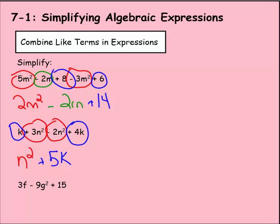For this last one here, we have 3f - 9g² + 15. Looking at exponents first, I see a squared, but I don't see anything else that's squared. For looking at variables then, I see an f here, but I don't see any other f's. I see one without a variable, but I don't see anything else without a variable. So this one cannot be simplified at all. And that's what we're going to write. Cannot simplify.